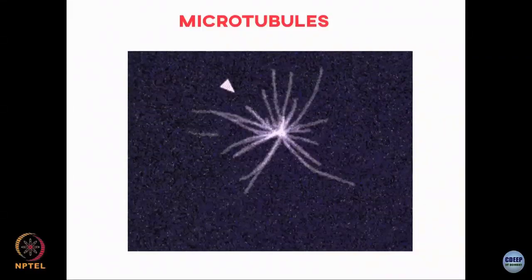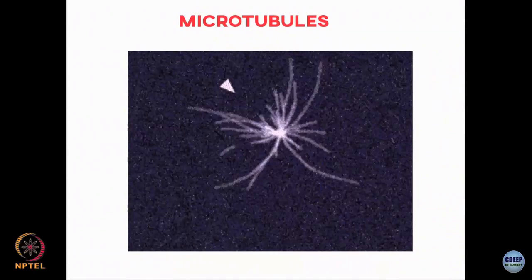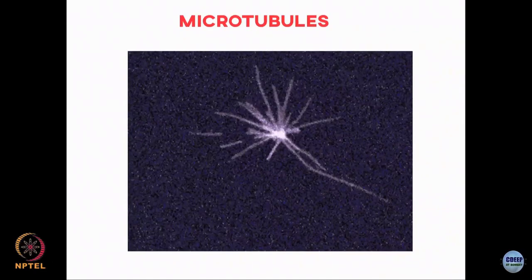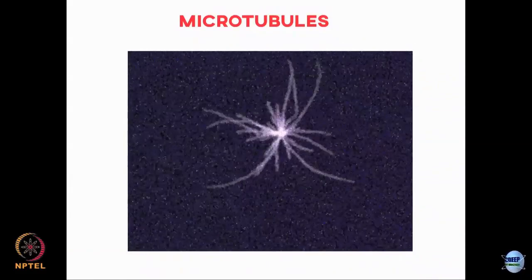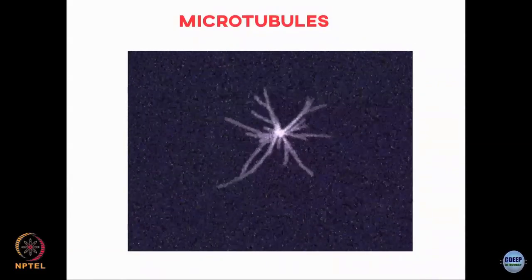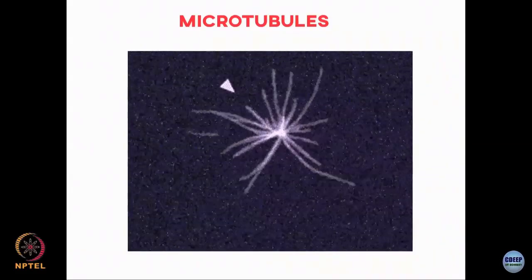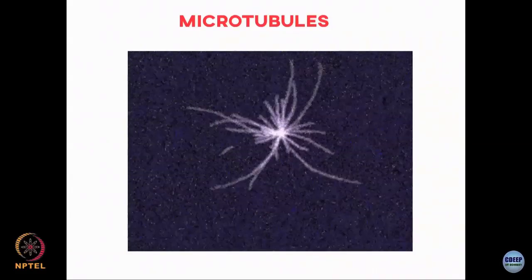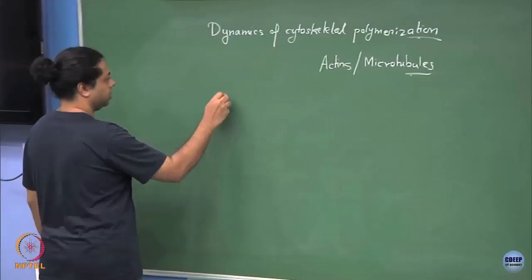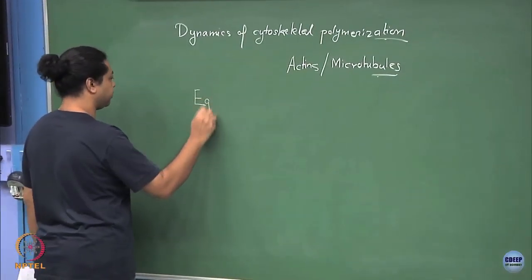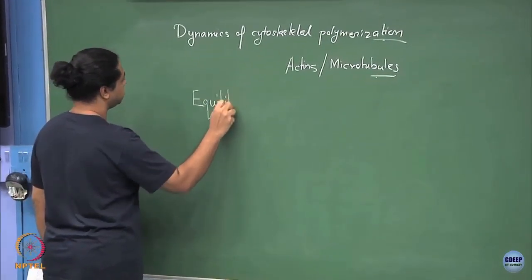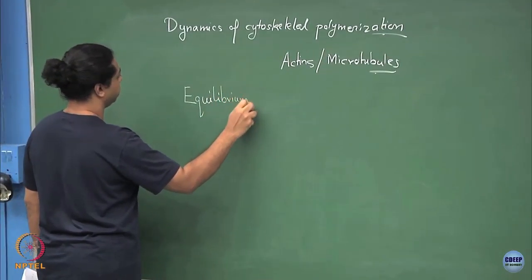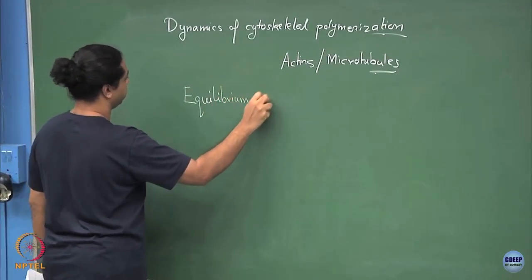So this is the basic biology, and then we will try to look at models at various levels of complexity to see how we can model this. We will start off with the simplest sort of model and then we will see what it does and what it does not do. We will start off with the model of an equilibrium polymer.